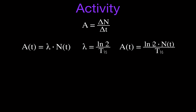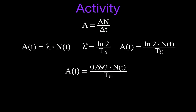The natural log of 2 is equal to 0.693, so sometimes you'll see this equation written as 0.693 times Nt divided by the half-life. This combined equation is equivalent to the two previous equations together.